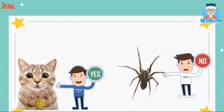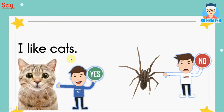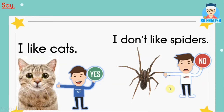Pupils, look at these pictures. 看看这图片。可以还记得吗？上一堂课所学的。小朋友举着是 yes，所以你要怎么说呢？I like cats. 我喜欢猫。那么看到这里，我不喜欢蜘蛛，那么应该怎么说呢？I don't like spiders. 我不喜欢蜘蛛。